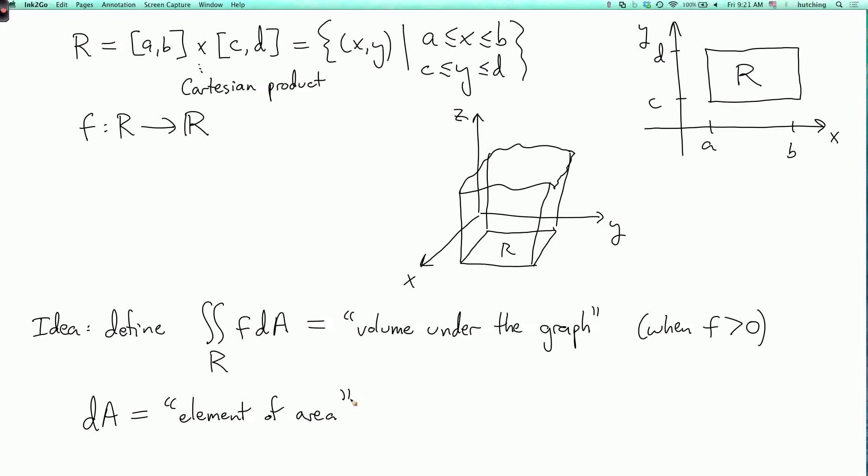Alright, so to make a rigorous definition, we're going to proceed analogously to what we did in the single variable case. So we're going to divide the rectangle R into n-squared sub-rectangles. So choose a rectangle. It goes from x equals a to x equals b, and from y equals c to y equals d. And we divide the x-direction into n equal parts. And we divide the y-direction into n equal parts.